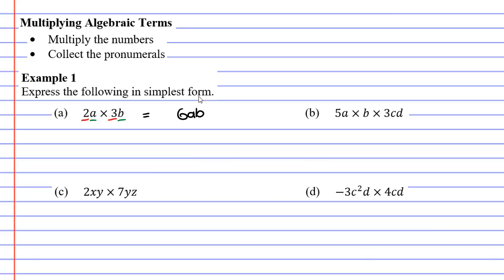Let's now look at question B. Looking first at our numbers, we've got 5 and 3. 5 times 3 is 15, and now we collect our pronumerals.